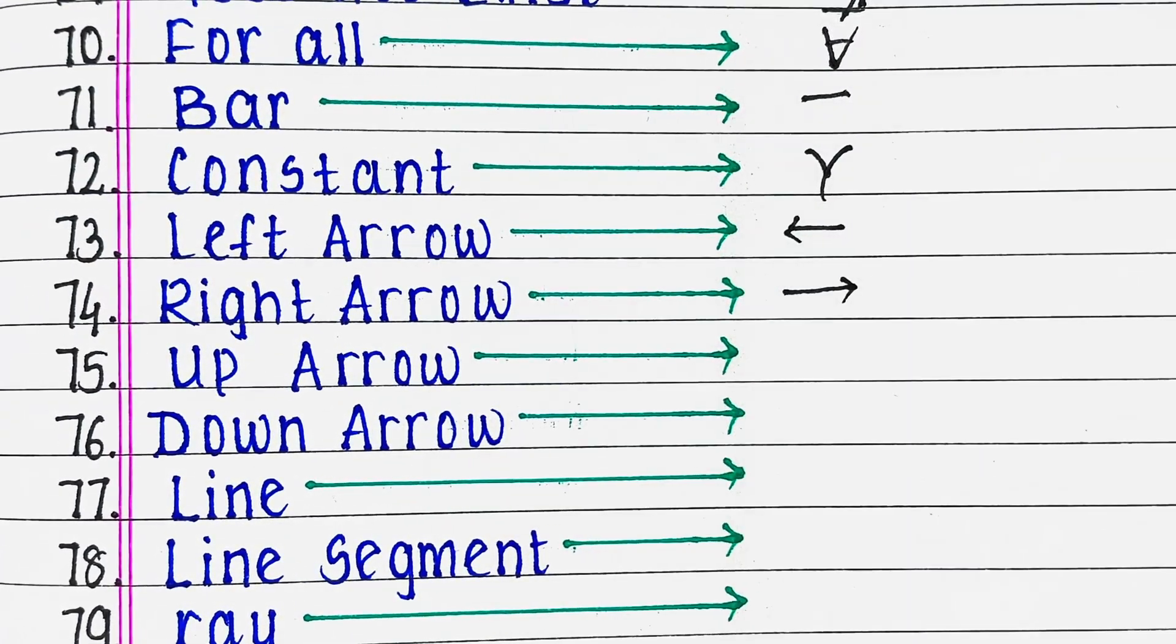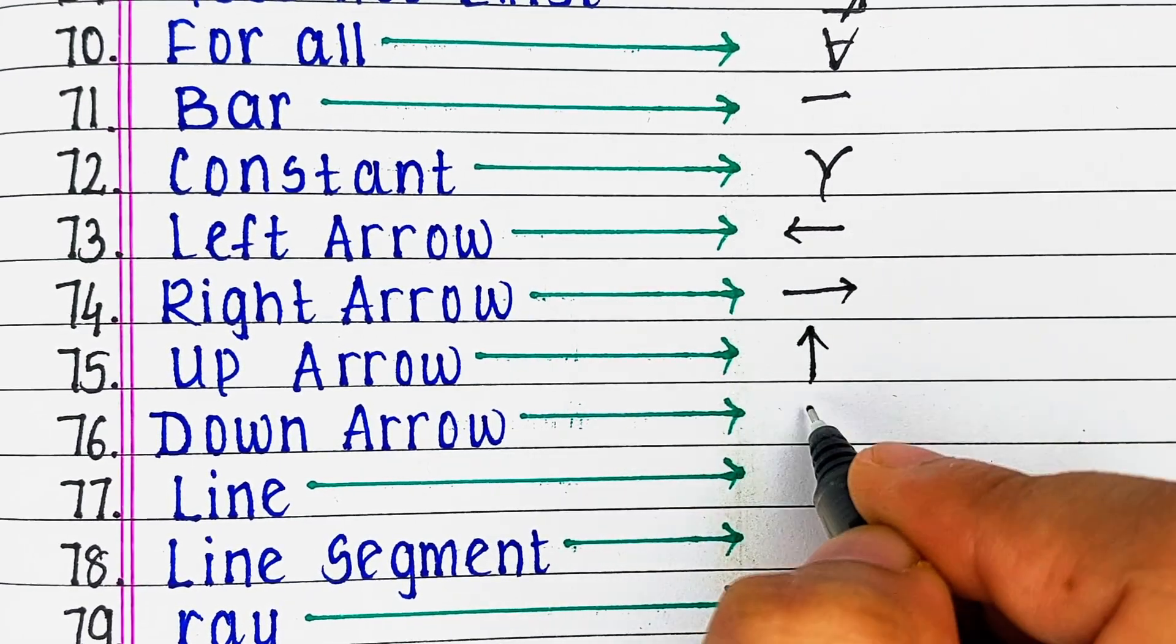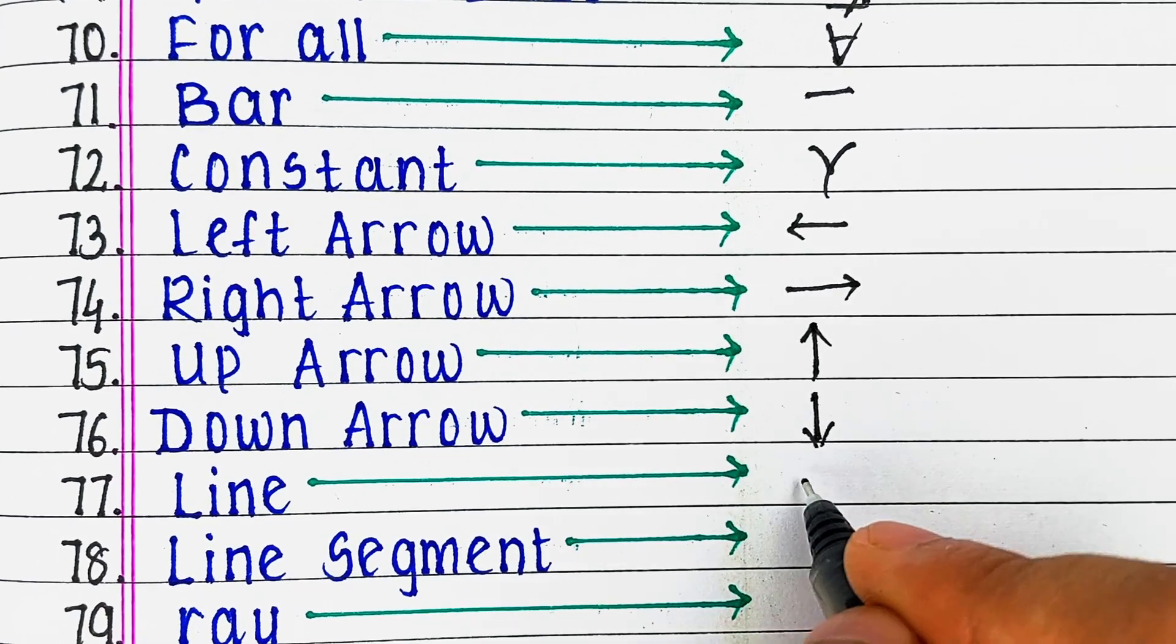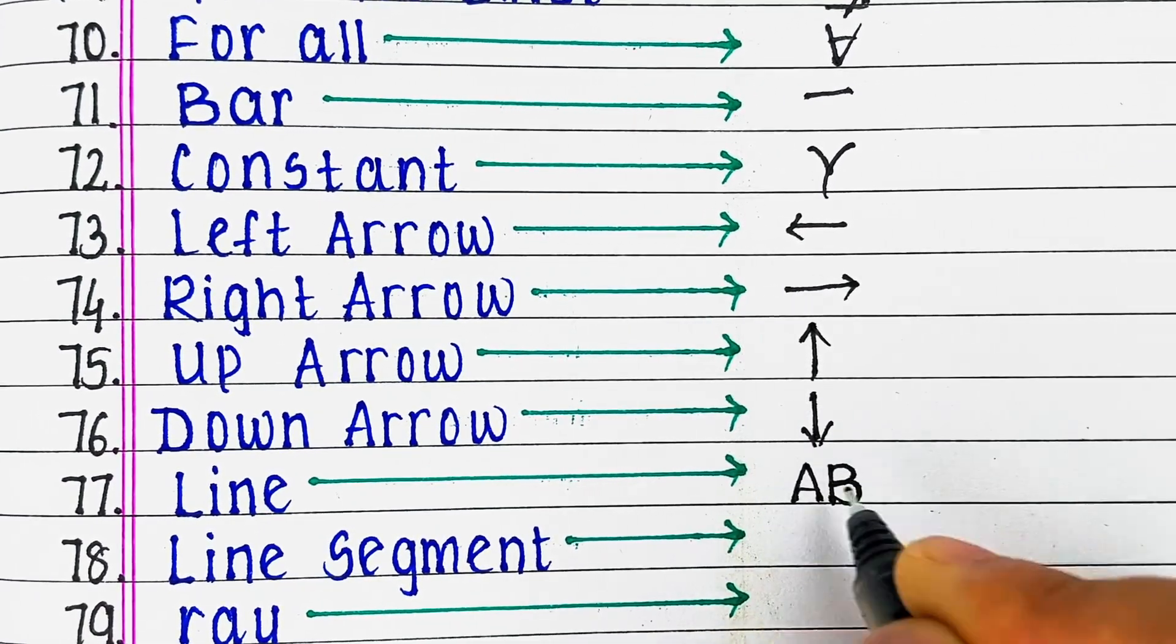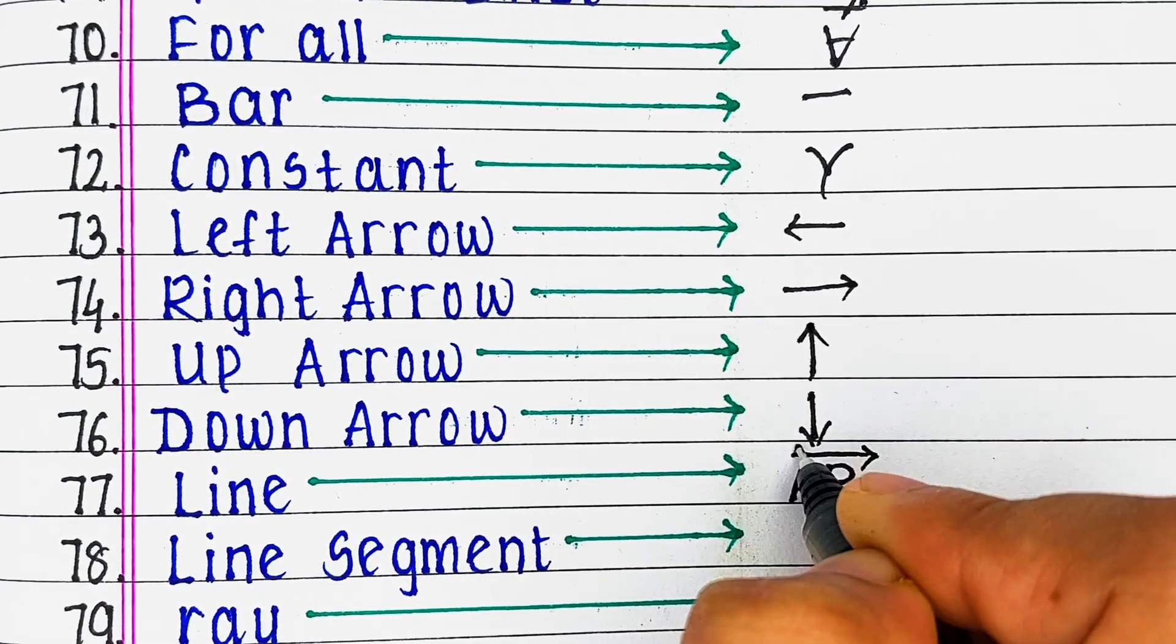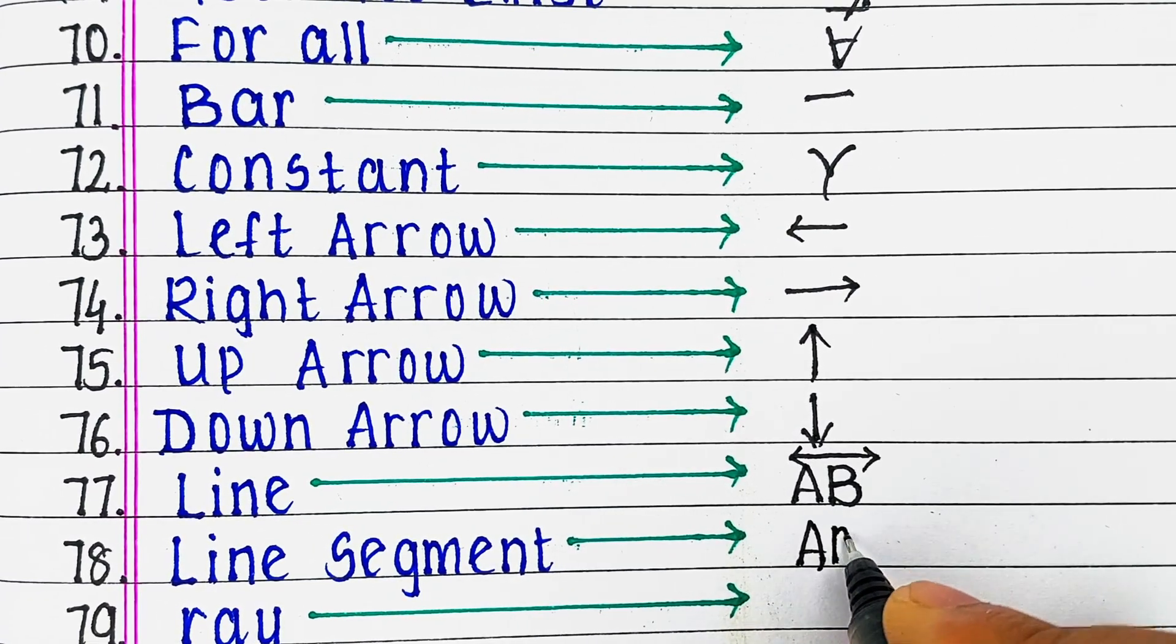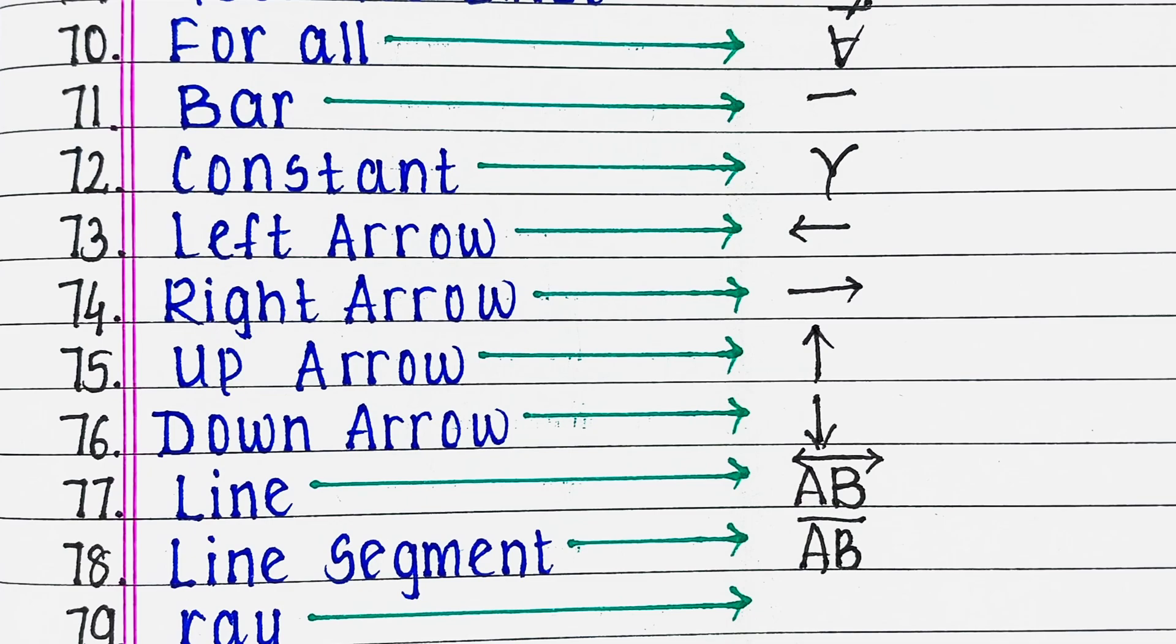Next right arrow, next up arrow, next is down arrow, next line, next is line segment, next ray.